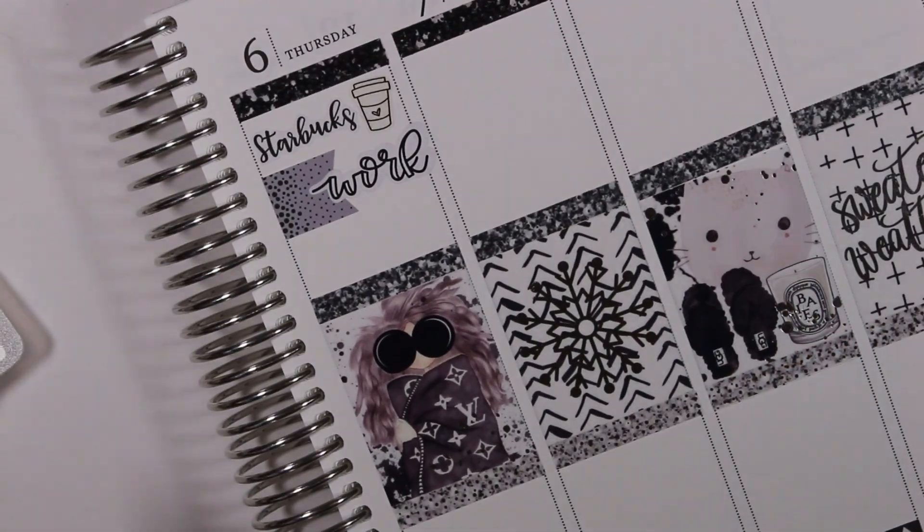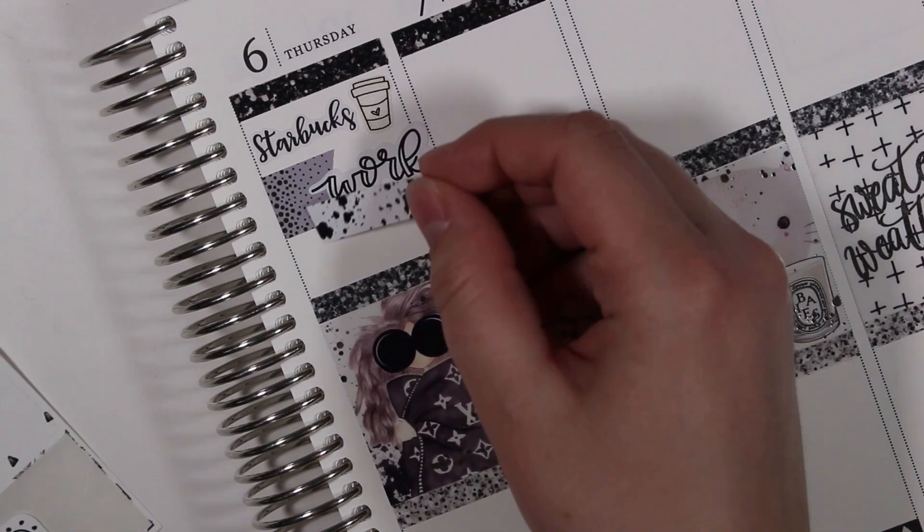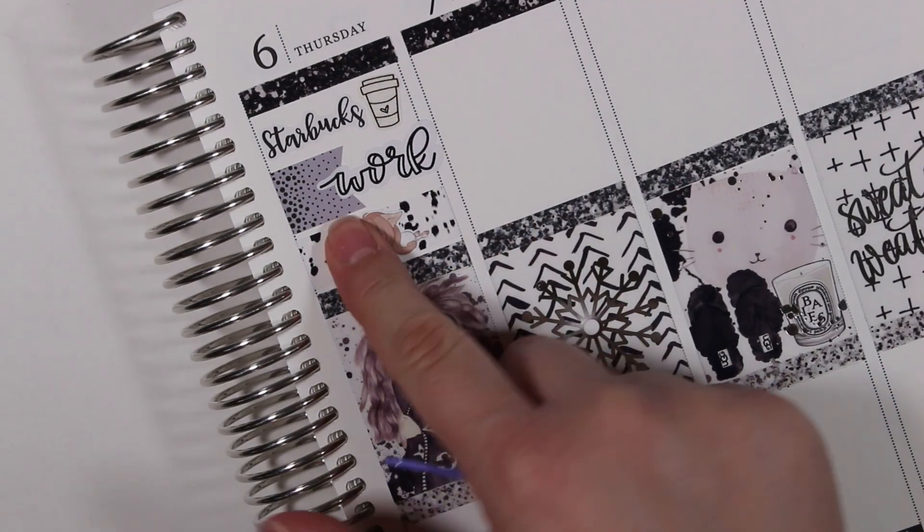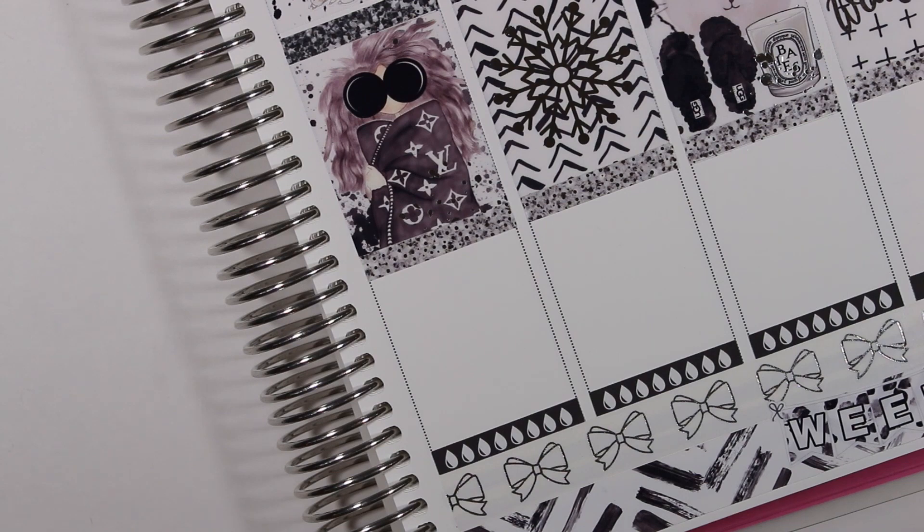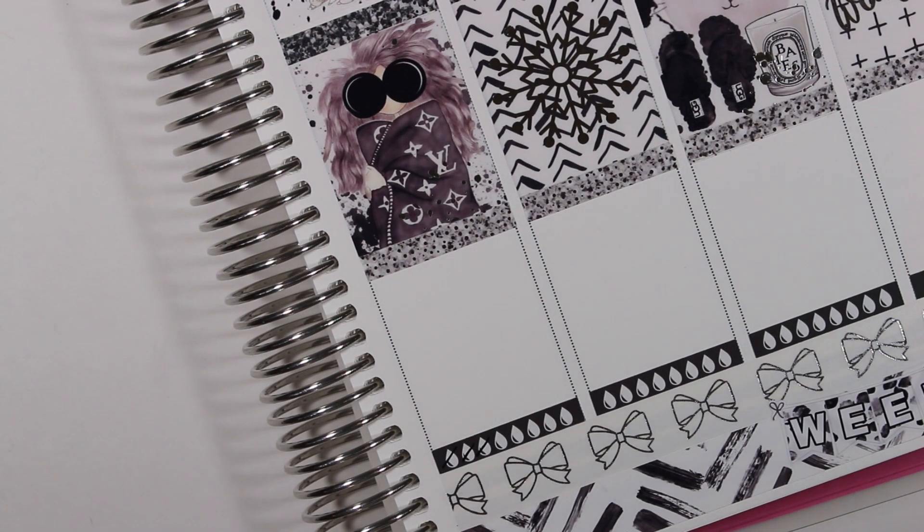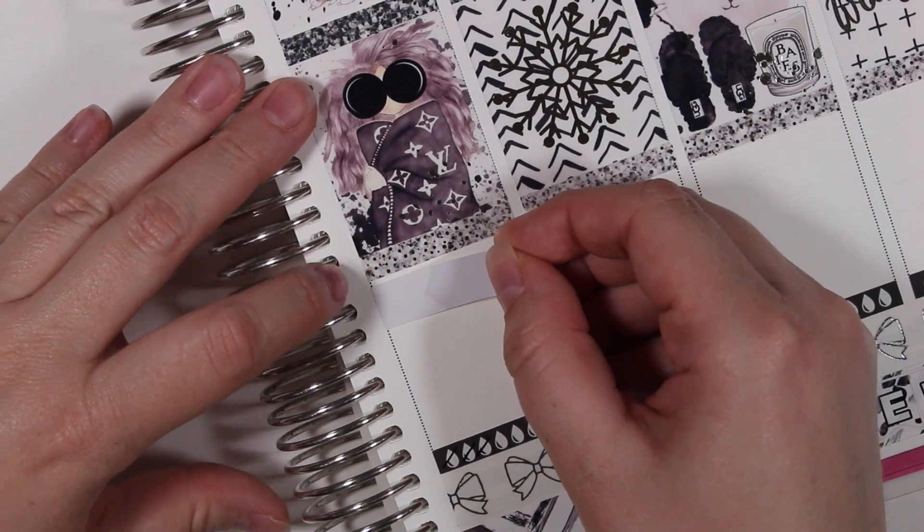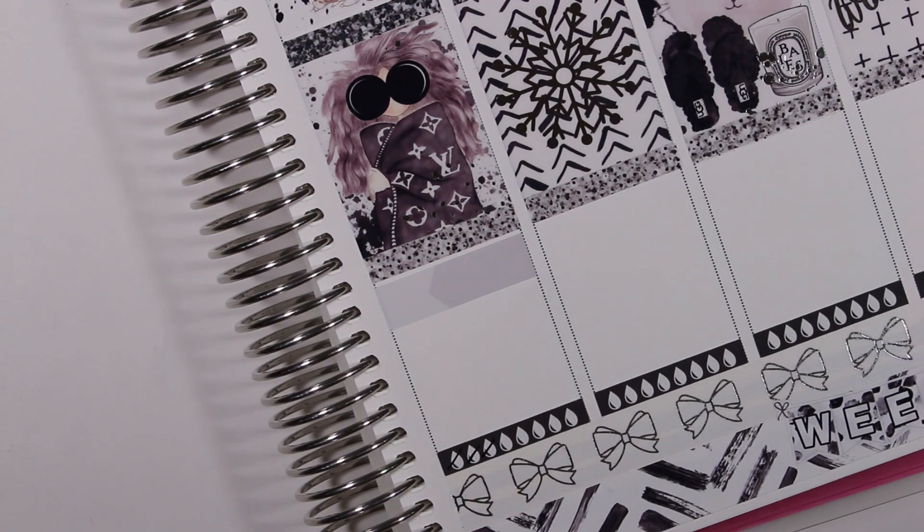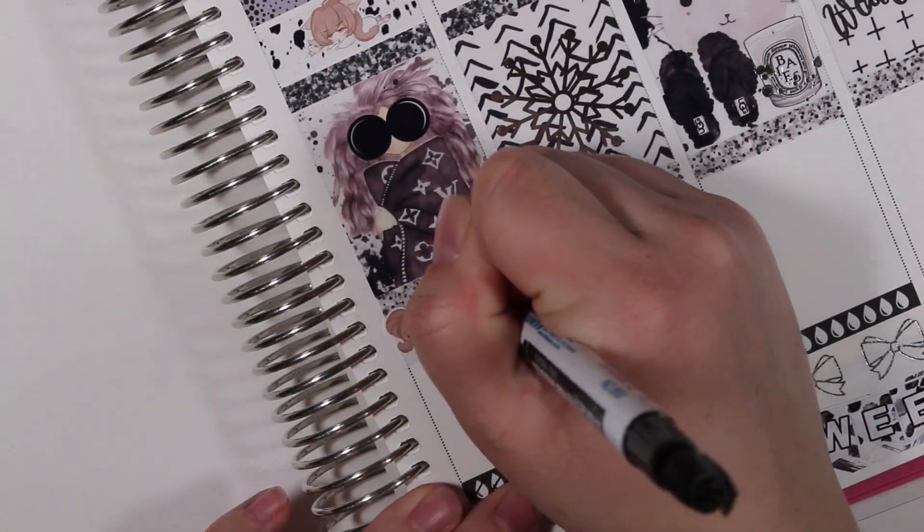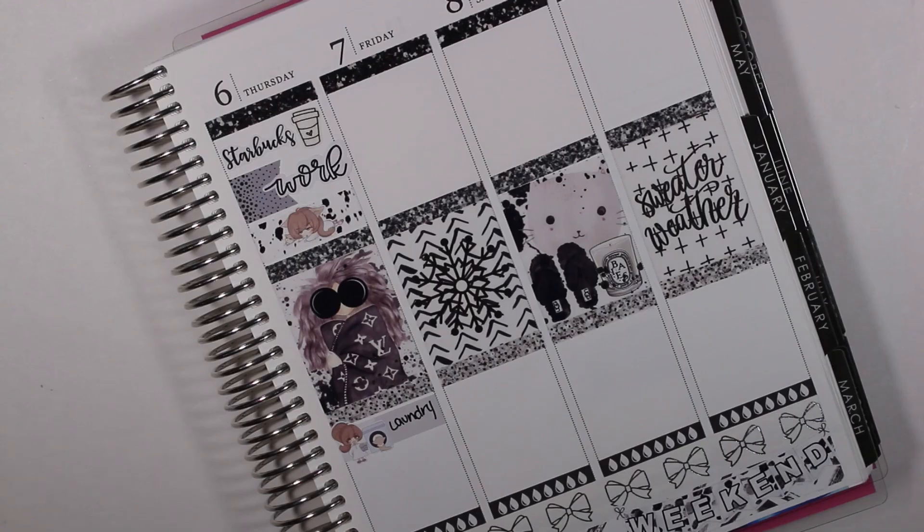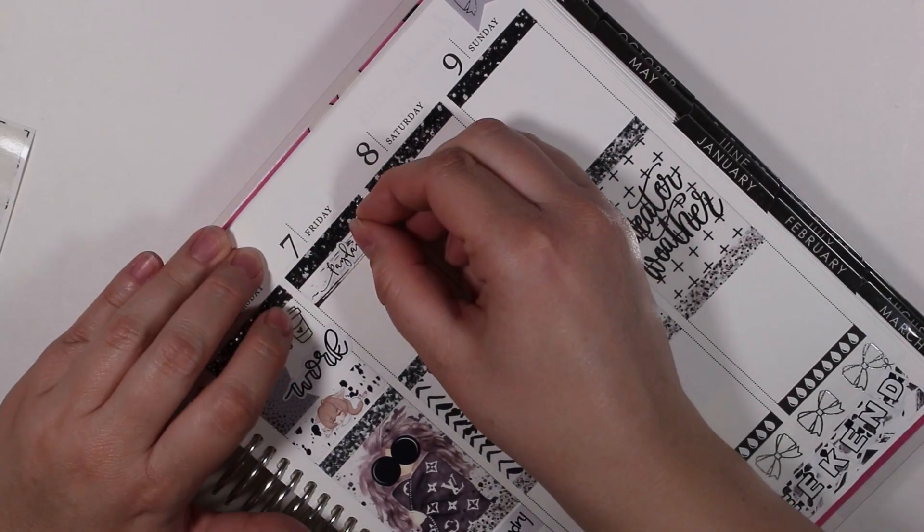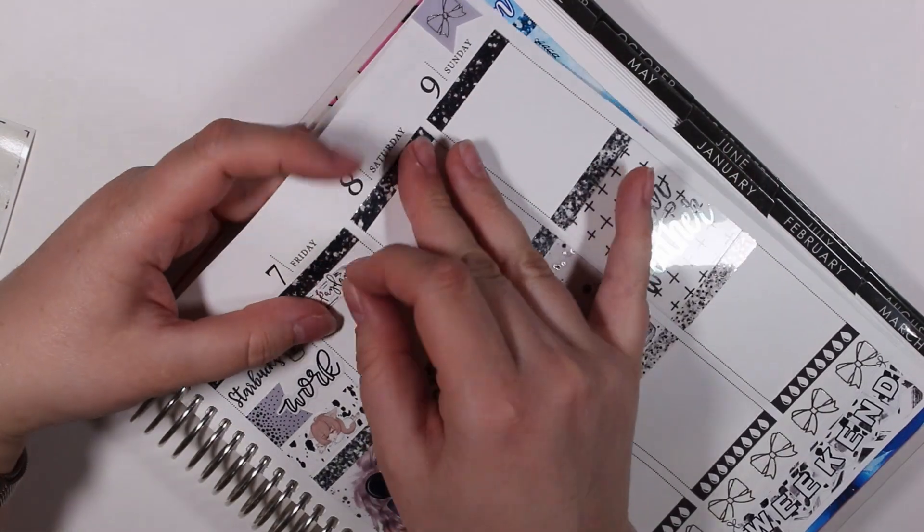Then I used a washi strip from the kit on Thursday with a tired looking bippity and boo because I was really feeling exhausted. I don't know why, I'm trying to remember why I was so tired that morning, I don't know. And then on the bottom half of Thursday I used an appointment label from the kit with a laundry doing bippity and boo to mark that I did some laundry. And then I'm marking my payday with a washi strip from the kit with a silver foil payday sticker from Rose Colored Days.